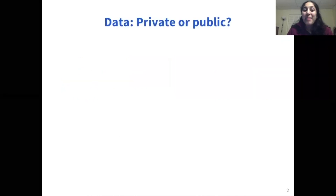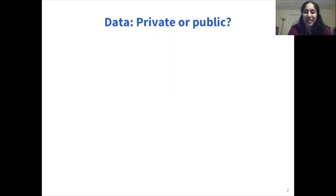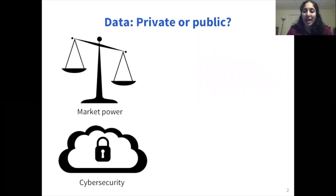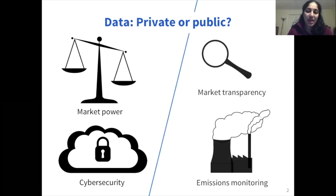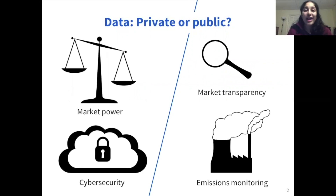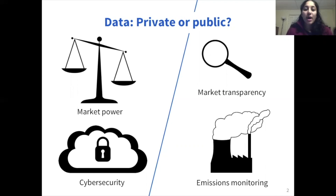In the power sector, many organizations often face an age-old conundrum: should they make their data public or should they keep it private? On the one hand, keeping data private may help ensure that market participants can't use this data to game the market, or can help protect the grid from cybersecurity attacks. On the other hand, as many researchers can attest, public data is extremely beneficial for energy systems analyses that can help us create cleaner and more reliable grids — for instance by promoting market transparency or allowing us to monitor grid emissions. With all that said, while this private versus public decision is often viewed as binary, we argue that the line between private and public data is actually a bit blurred.